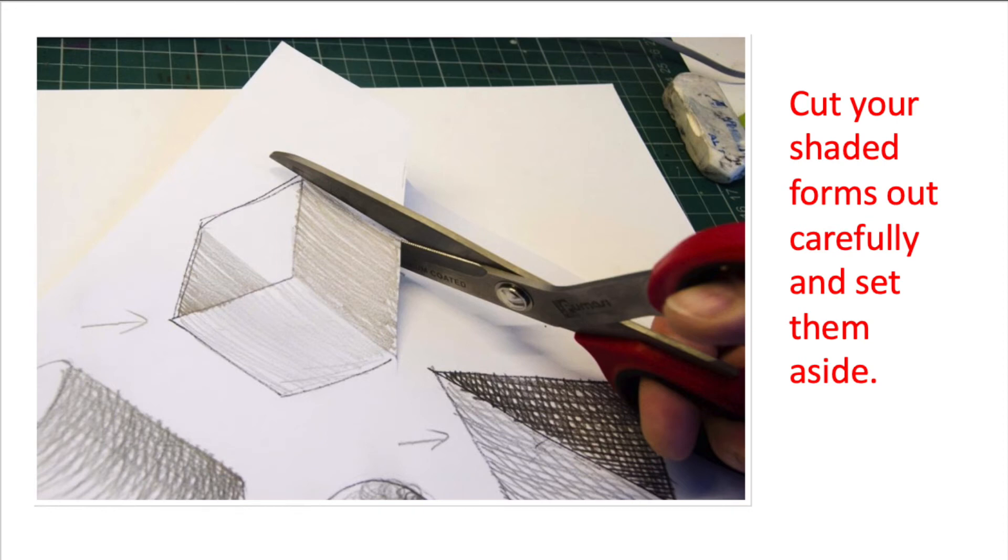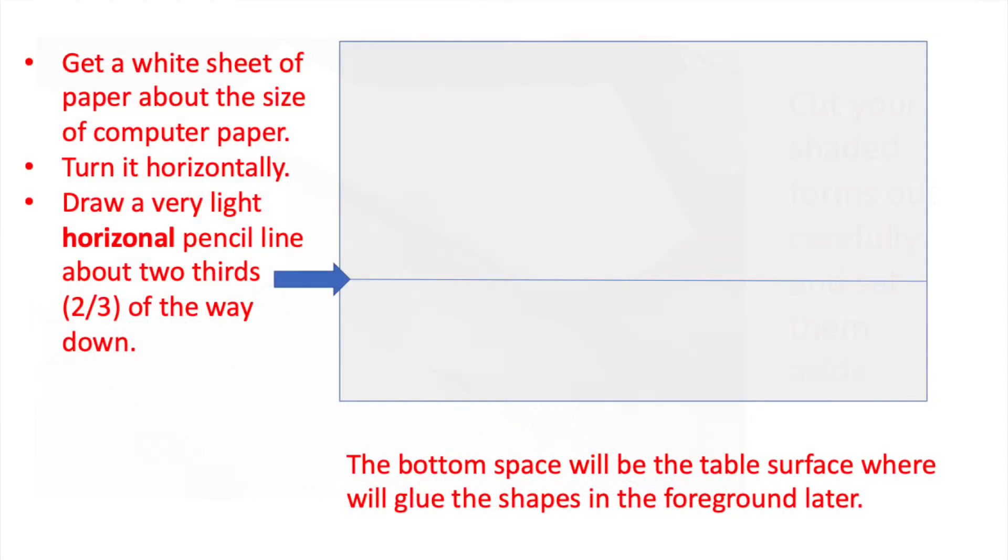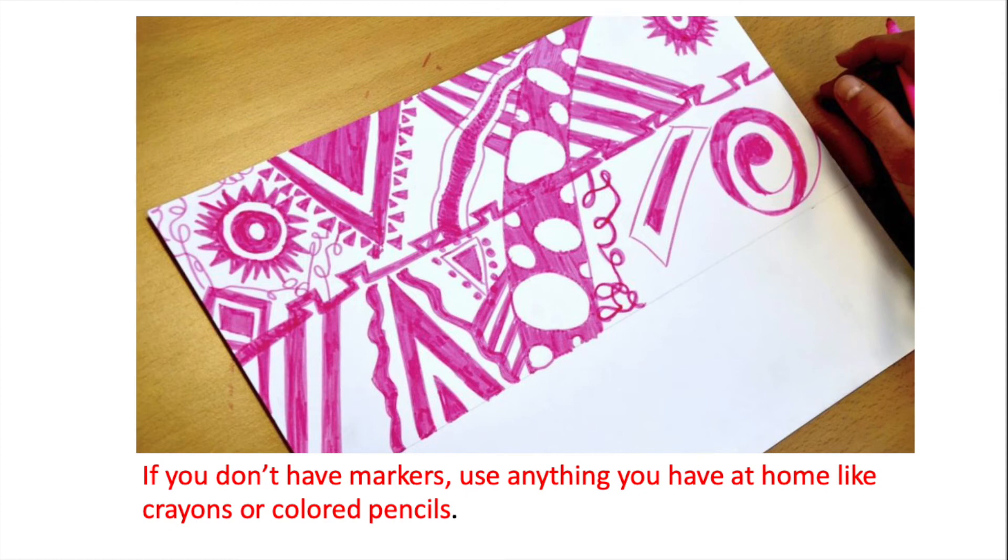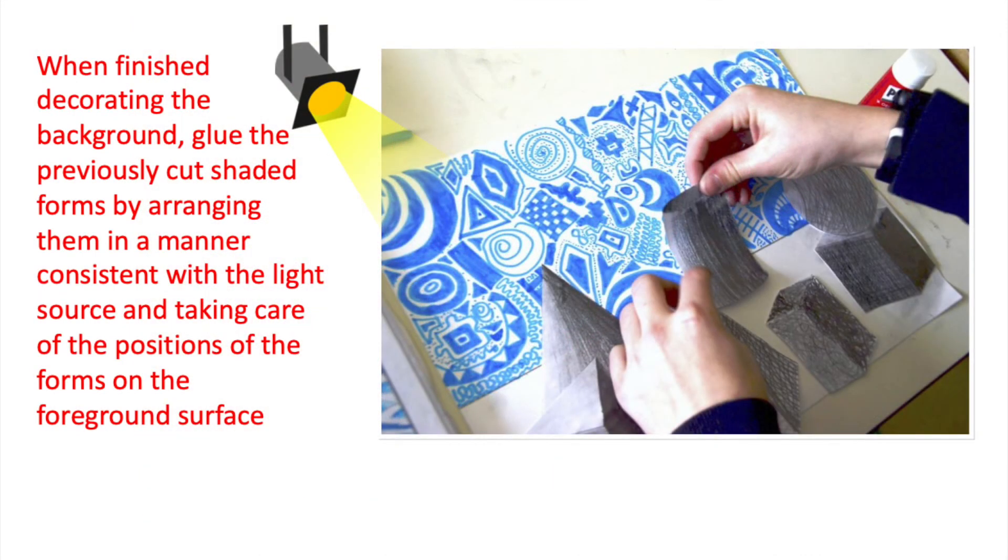Once you are finished shading, you will cut your shaded forms out carefully and set them aside. Next, you will get a white sheet of paper about the size of computer paper. You will turn it horizontally and then draw a very light horizontal pencil line about two-thirds of the way down. The bottom space will be the table surface where we will glue the shapes in the foreground later. Now, use any colored marker and begin drawing a line design in the section above the line that makes the table surface. If you don't have markers, use anything that you have at home like crayons or colored pencils.